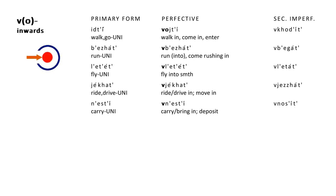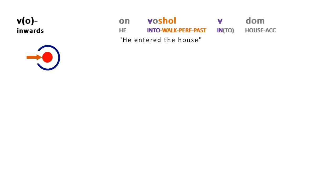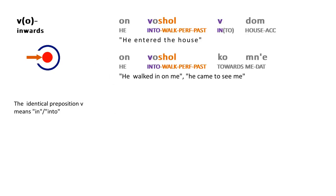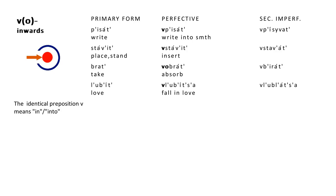The prefix 'в-' indicates moving into some area. 'Войти' means to walk in, to enter. 'Вбежать' means to run into. 'Влететь' means to fly into — into the fog or into the room through the window. In many phrases you can see the identical preposition 'в' used for the destination area, though it is not the only option. The same logic applies to non-motion verb stems: 'вписать' means to write something into — for instance, into a list.